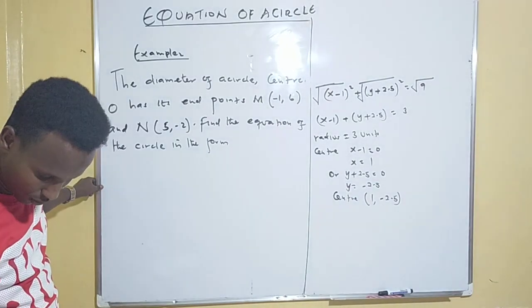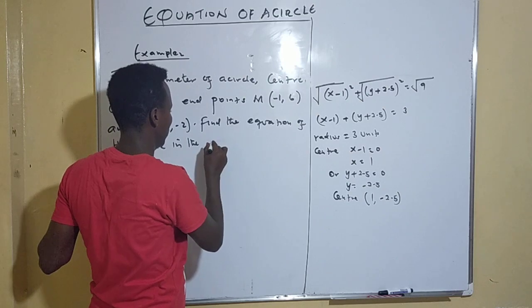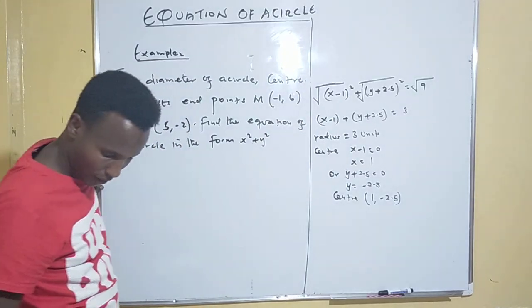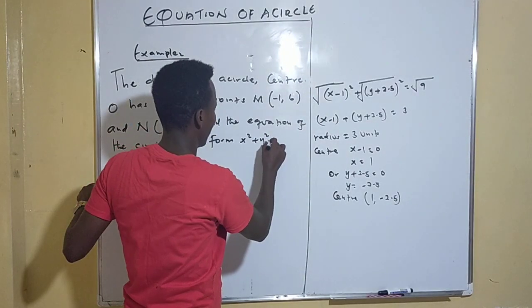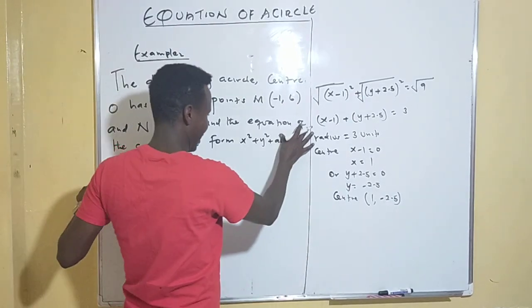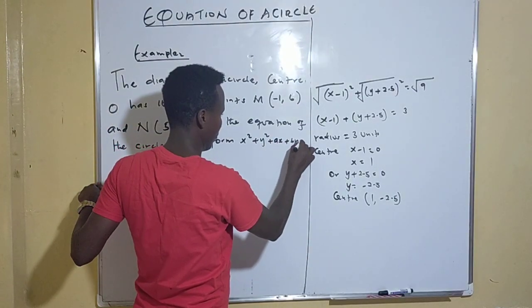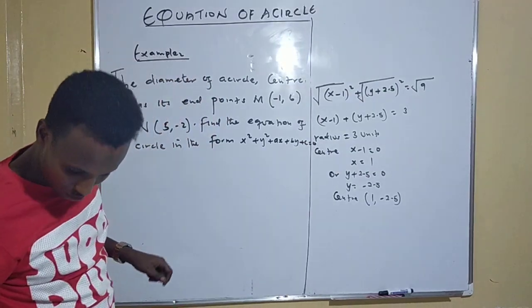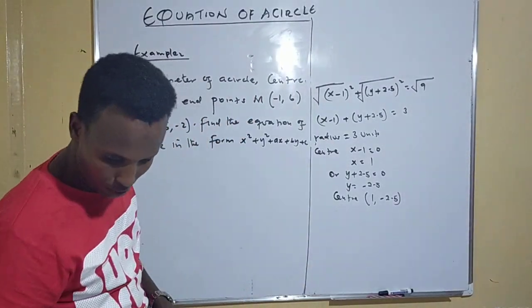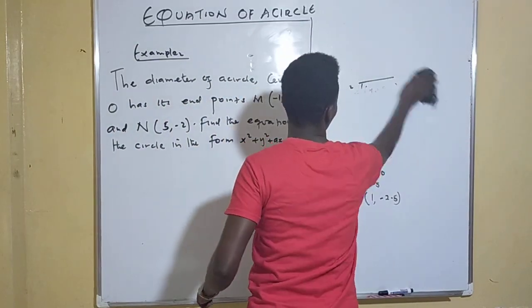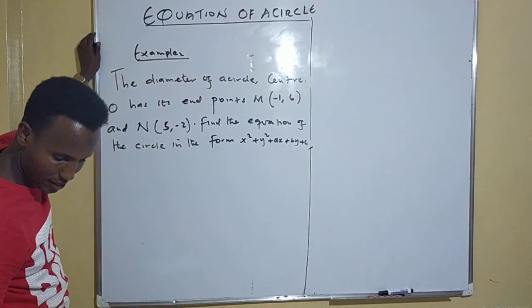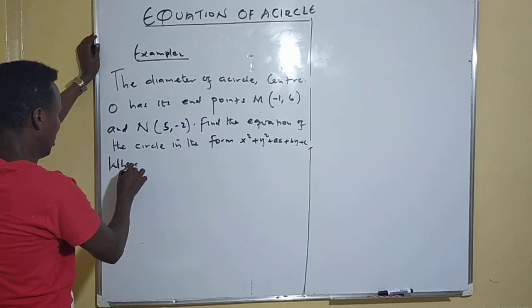Part one: find the equation of the circle in the form x² + y² + ax + by + c = 0, where a, b, and c are constants.